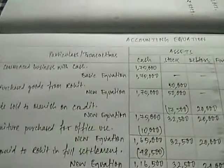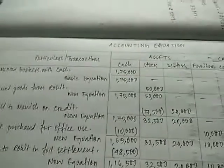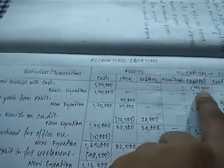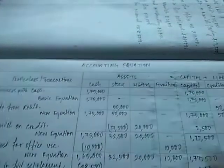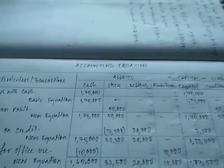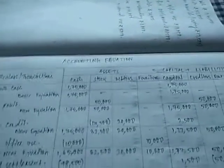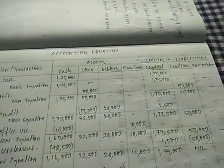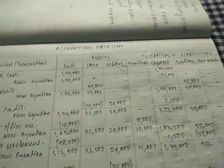Commencement started. Commence business with cash Rs. 1,75,000 — so cash and capital Rs. 1,75,000. Here we need to make 7 columns: cash, stock, debtors, furniture, capital, creditors, and rent outstanding.